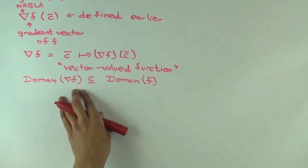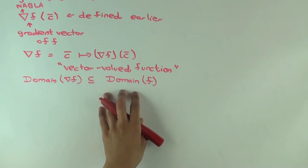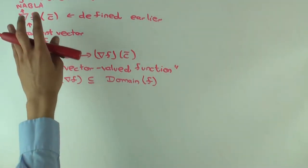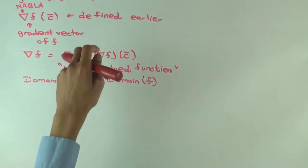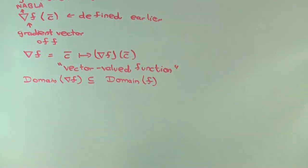So this may not be equal. This thing could be much smaller than this. But the key point is the derivative of a scalar function, the gradient vector, is no longer a scalar function. It's a vector-valued function.